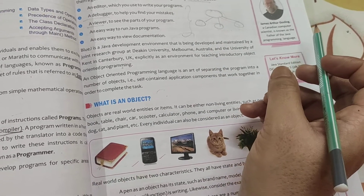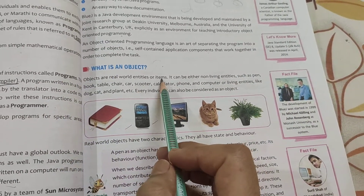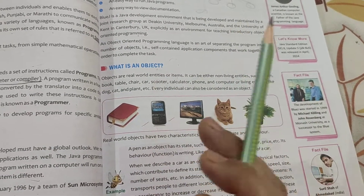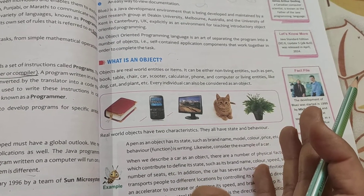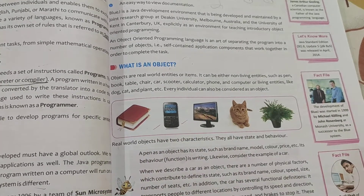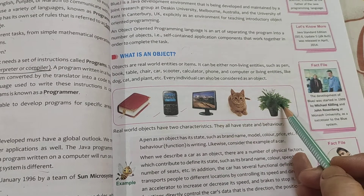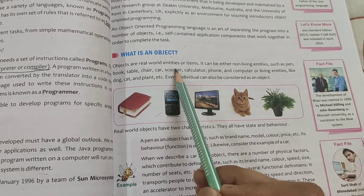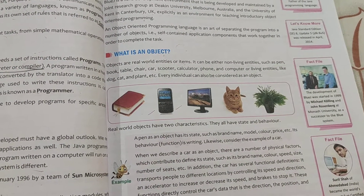In physics and chemistry you also learned: what is an object? Anything that has mass and occupies space is an object. You students are also objects because you have a fixed mass and you are occupying some space. All the things shown in the picture here — book, table, chair, scooter, calculator, phone, and computer — all are objects, all are living entities.